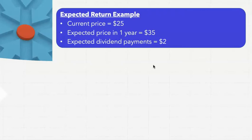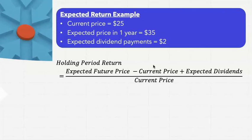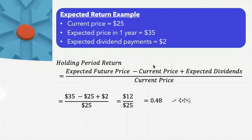Example: calculating the expected return using the holding period return formula. Current price is $25, expected price in a year is $35, expected dividend payments are $2. The formula is: holding period return equals (expected future price minus current price plus expected dividends) divided by current price. So: (35 minus 25 plus 2) divided by 25, which equals 0.48 or 48%. If the price rises before purchase, the expected return falls; if the price falls, the expected return rises.